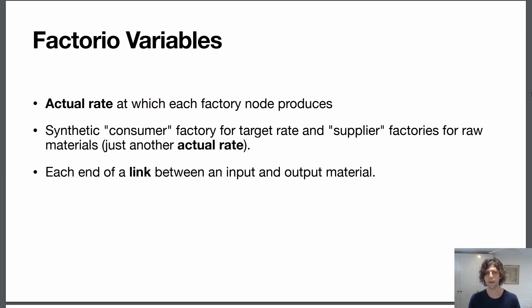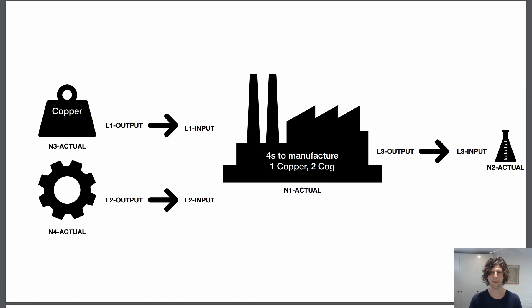Each end of a link between an input and an output is also going to be a variable. So it's going to look like this. So you can see we've got actual variables n1, n2, n3, n4 on each factory.